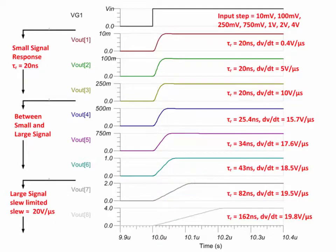In this example, input signals less than 250 millivolts caused a small signal response, and signals greater than 1 volt caused a large signal response. However, this transition depends on the amplifier's design and technology. CMOS amplifiers tend to reach slew limit for signals greater than 100 millivolts, and bipolar amplifiers can slew limit at even lower input voltages. Note that the industry standard for small signal response is a 100 millivolt step, but in practice, the actual limit may be lower.